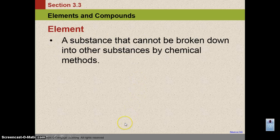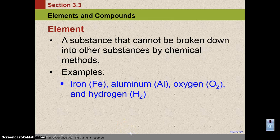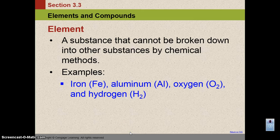An element, by definition, is a substance that cannot be broken down into another substance by a chemical method. Examples of this are iron, aluminum, oxygen, hydrogen.